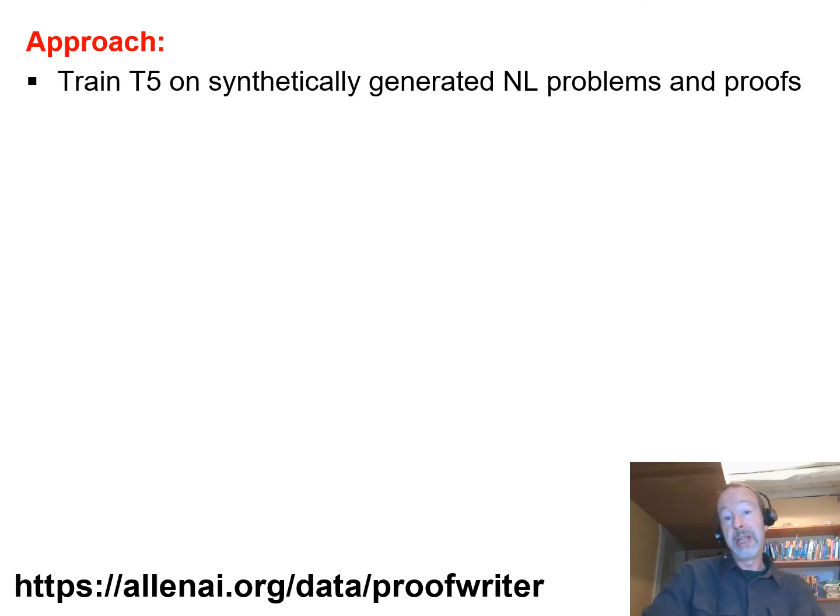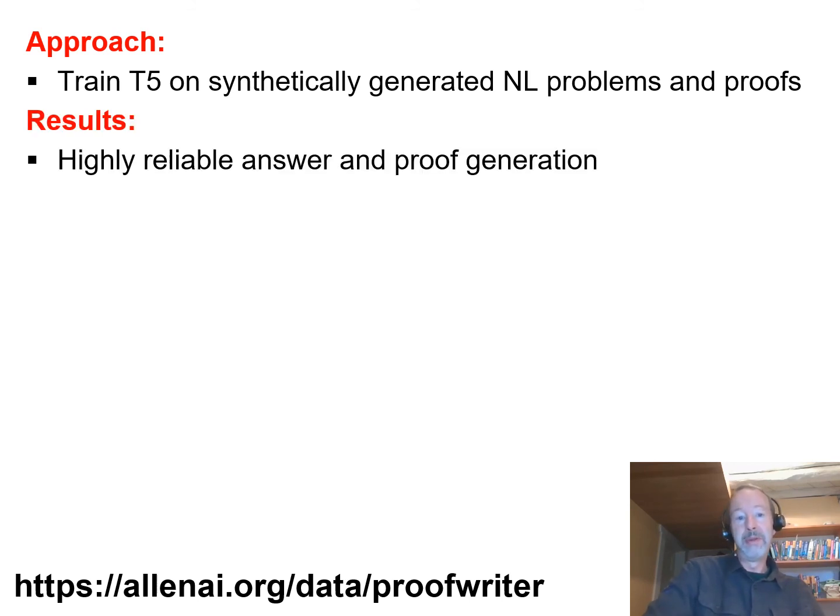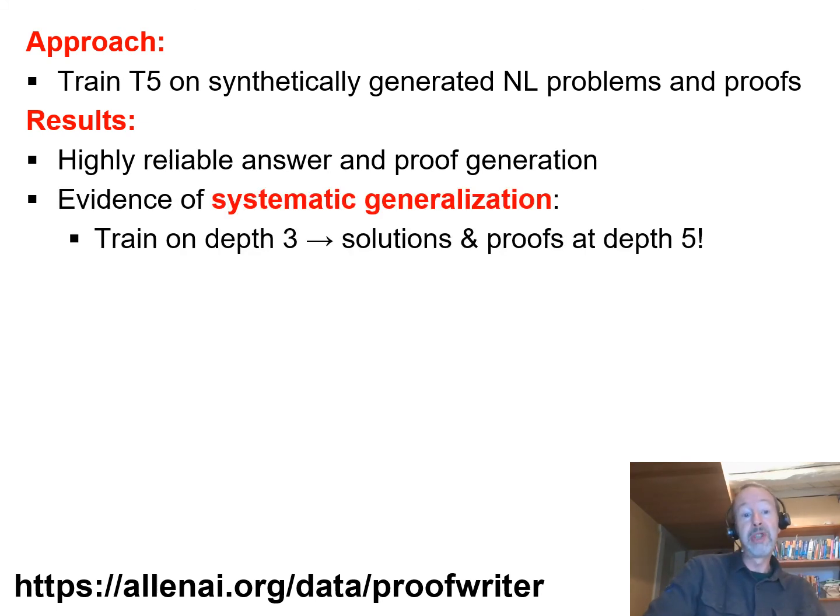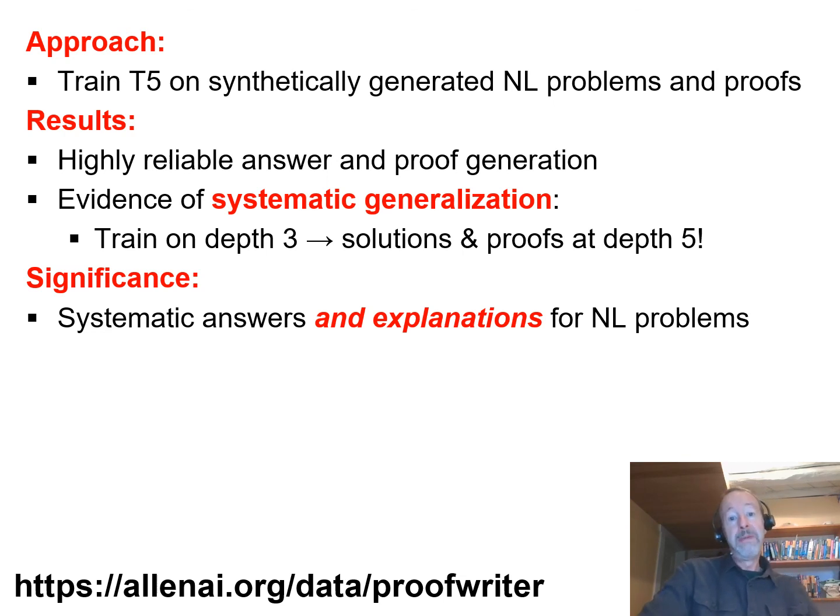So the technical details are in the paper, but briefly, our approach is to train T5 on synthetically generated natural language problems and proofs, and the results are highly reliable answer and proof generation, including evidence of systematic generalization. We can train on proofs up to depth three, and it generates proofs reliably at depth five.